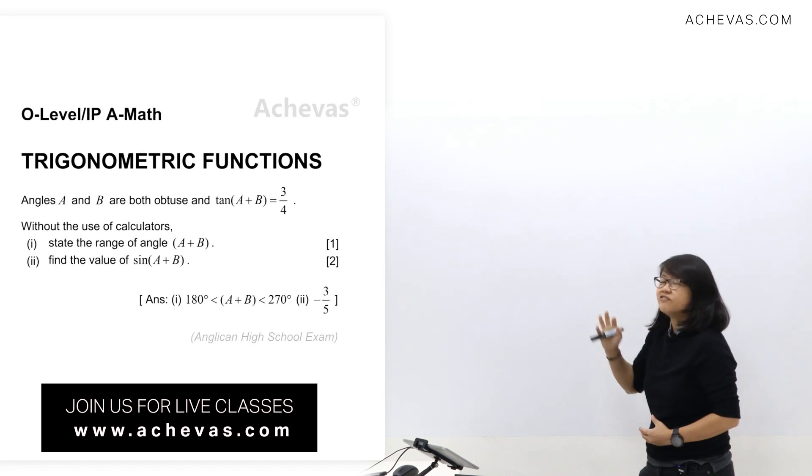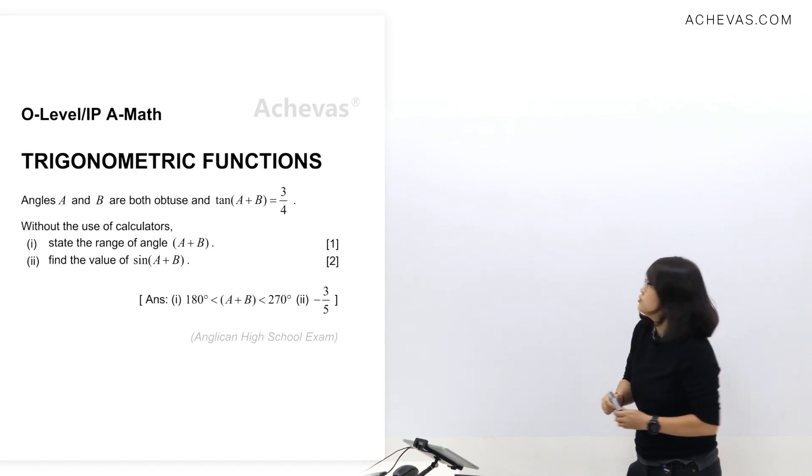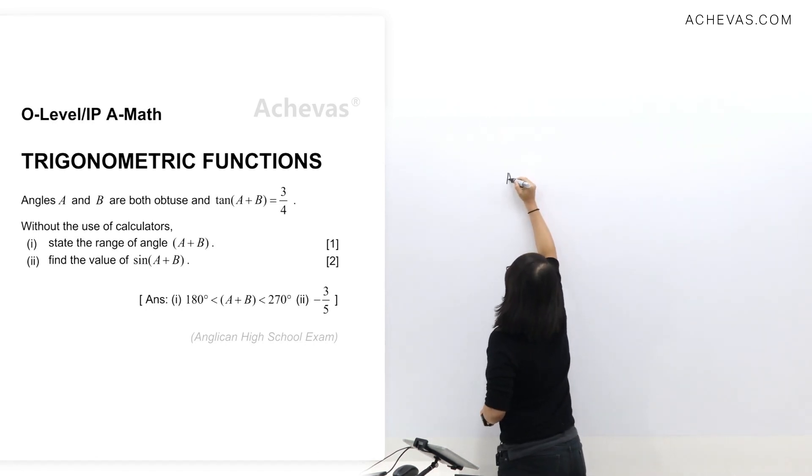Now let's take a look at the information we have. We know that for obtuse angles, angle A and B are both obtuse. So let me write down angle A must be between 90 to 180, same as for angle B.